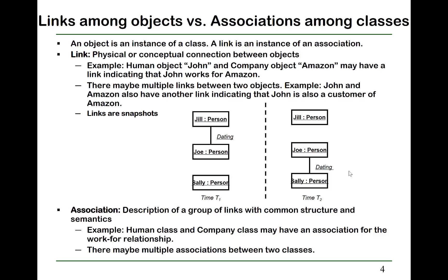An association describes a group of links with common structures and semantics. For example, the human class and company class may have an association for the workforce relationship, and there may also be multiple associations between two classes.